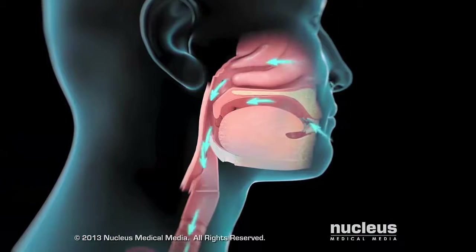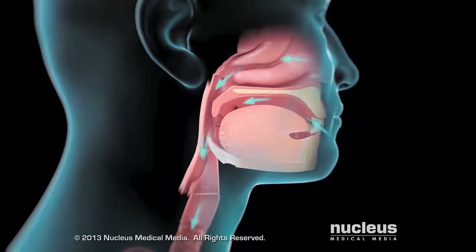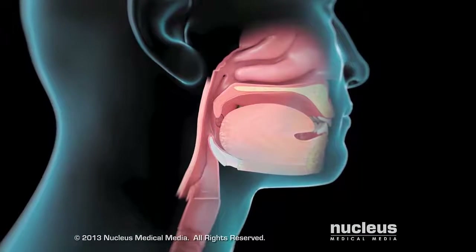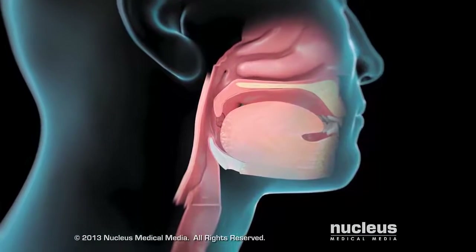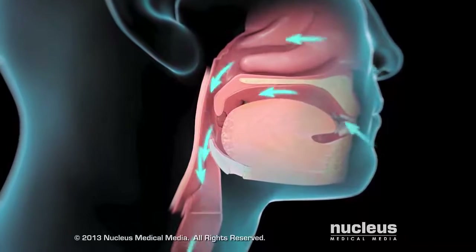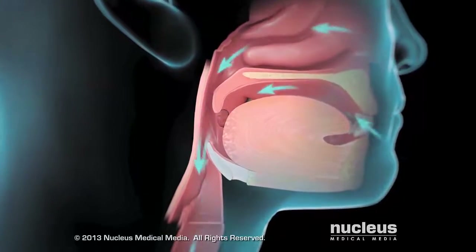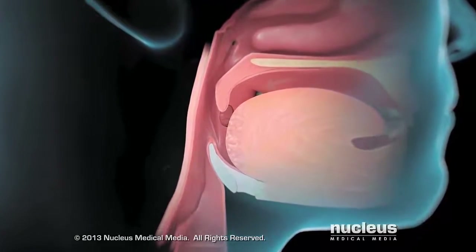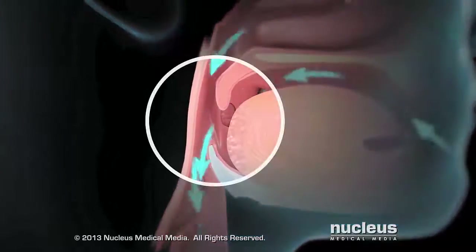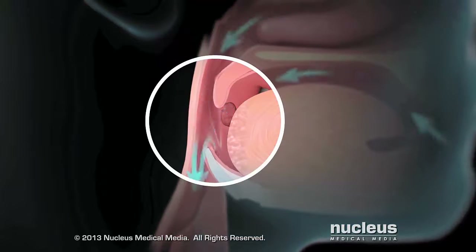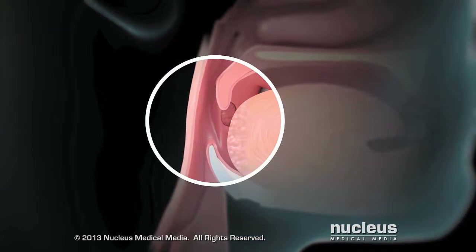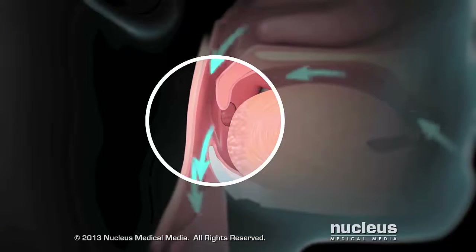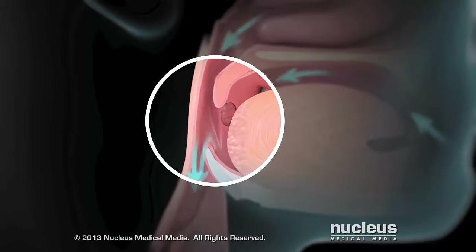Each time you breathe in, negative suction pressure pulls the soft tissues in your mouth and pharynx inward. The muscles in your pharynx respond by pulling the soft tissues outward again, which keeps your airway open.